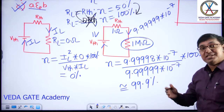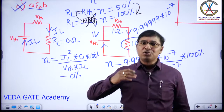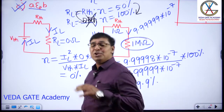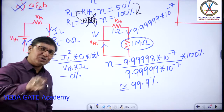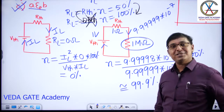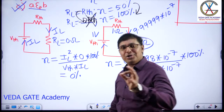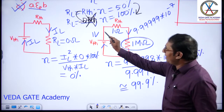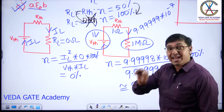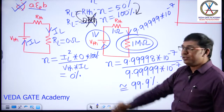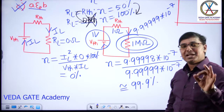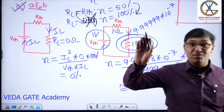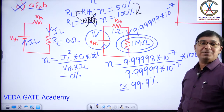How is efficiency 100 percent when load resistance is infinity? If the source delivers 100 watts and the load uses 100 watts, efficiency is 100 percent. Whatever power is delivered by the source, if the same amount is used by the load, efficiency is 100 percent. So when RL is infinity, efficiency is 100 percent.